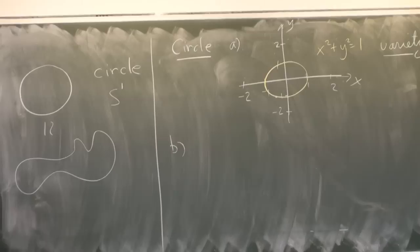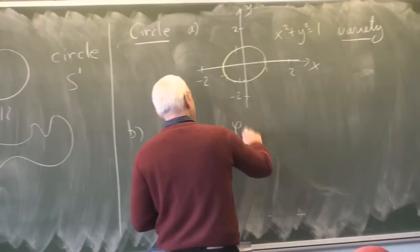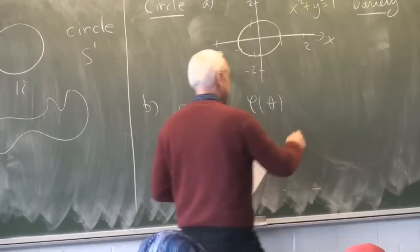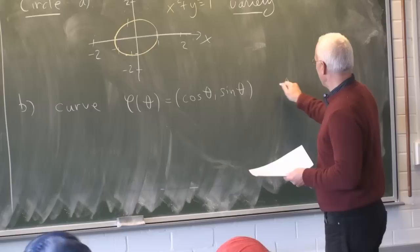Another way of thinking about the circle is as a curve — we can think of it as given by the motion of a particle. The standard way of doing that is to introduce an angle theta and say φ(θ) = (cos θ, sin θ), where theta goes between 0 and 2π. That's the usual transcendental parametrization.